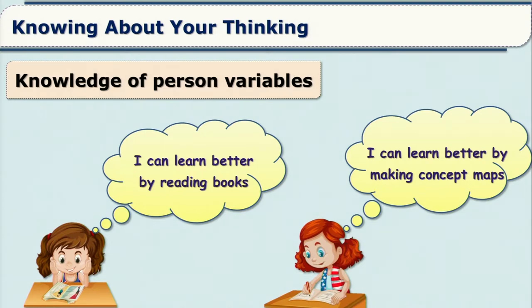Look at this picture. Here there is one girl who is saying that she can learn better by reading books — she is aware that her learning can be better by reading books. Whereas another girl feels that if she makes use of a concept map, she is going to learn better. Similarly, you may have experienced that some people can learn better if they study in the library, or some might study better at their own home.